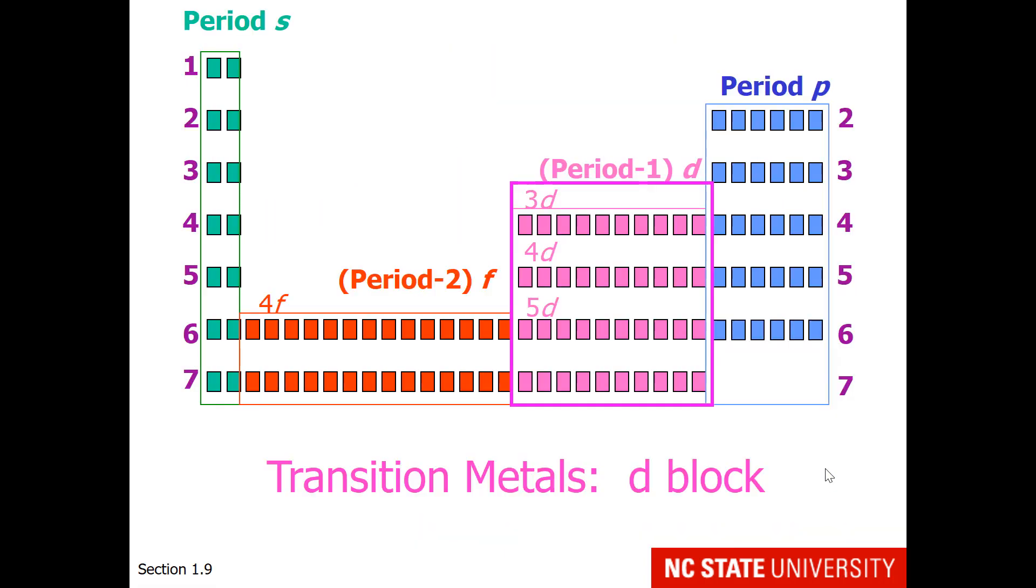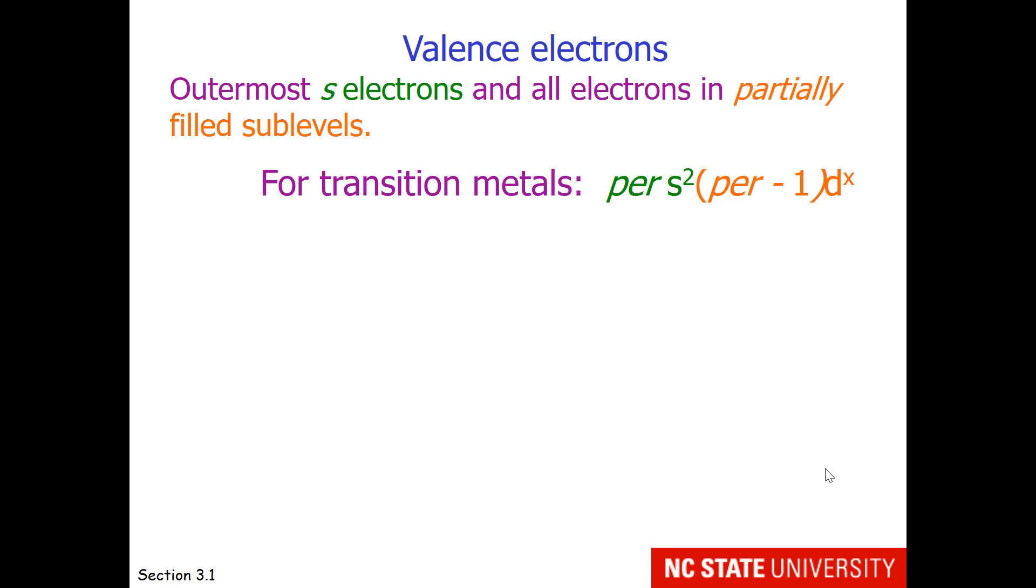What about transition metals? These are elements whose last electrons are added to the d-block. The valence electron definition is the same. It is outermost s electrons and all electrons in partially filled sublevels. So for transition metals, this would mean whatever period we're in, s2, and then period minus 1 with the number of d electrons.